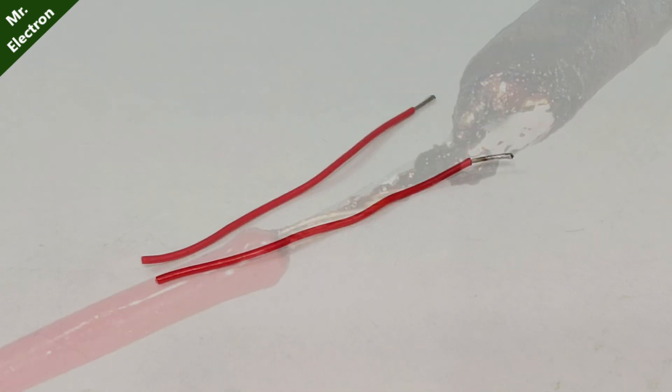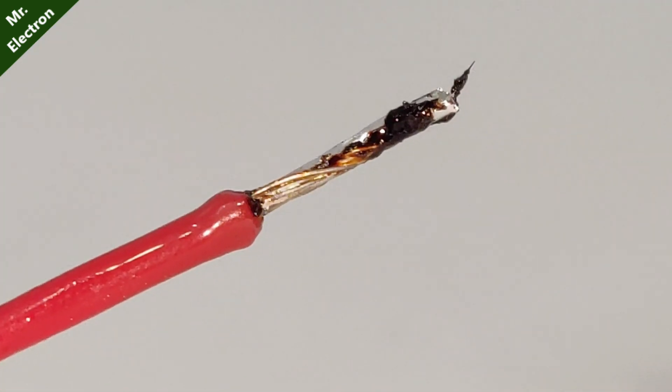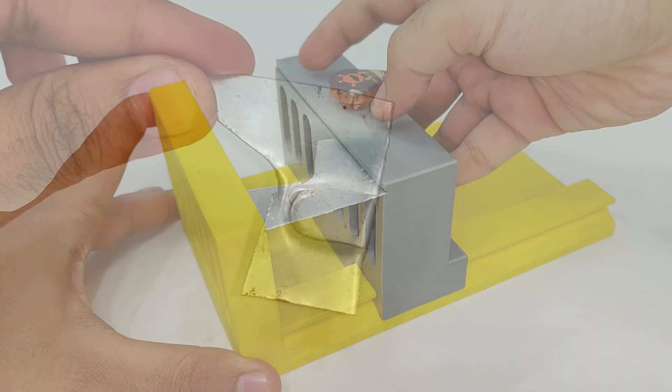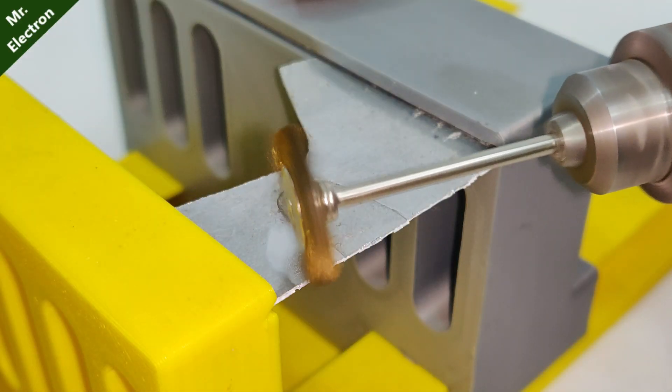Take two copper wires and solder their ends on one side. Next, take an aluminum sheet and fix it for performing the cleaning process.